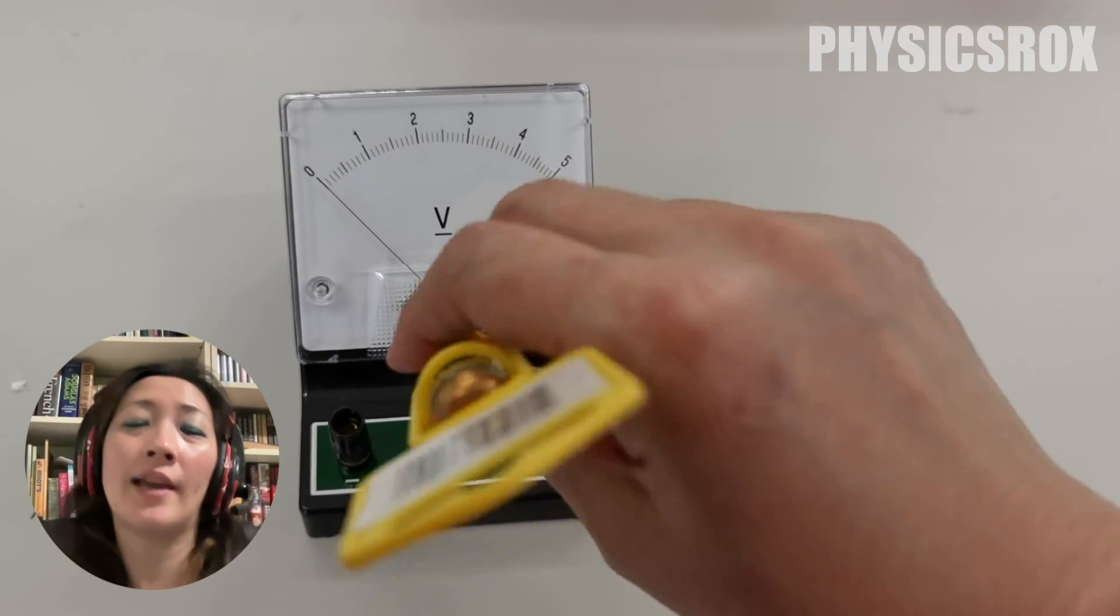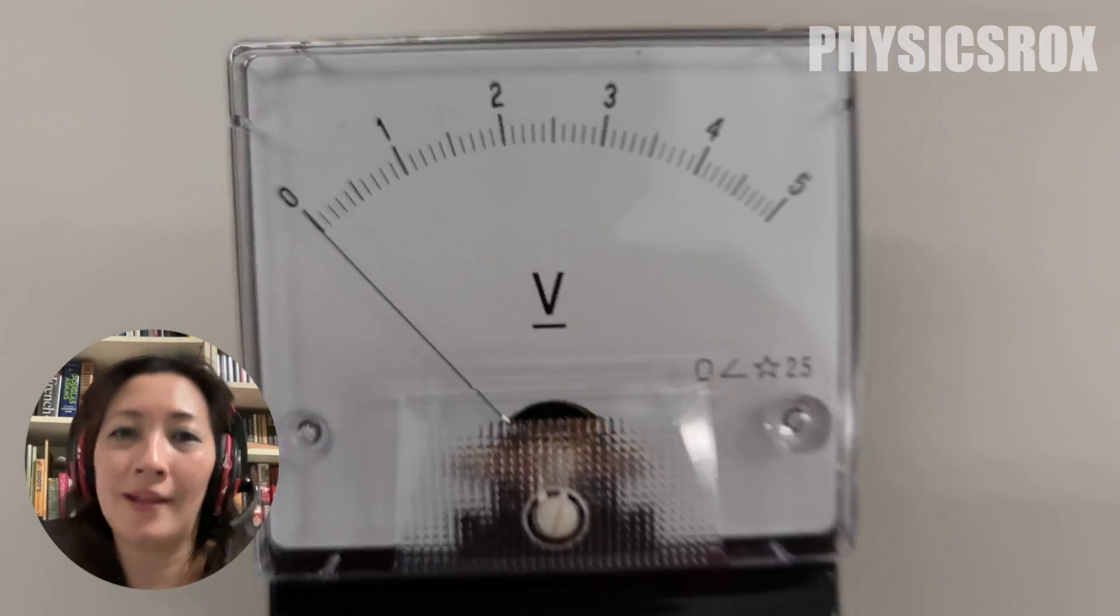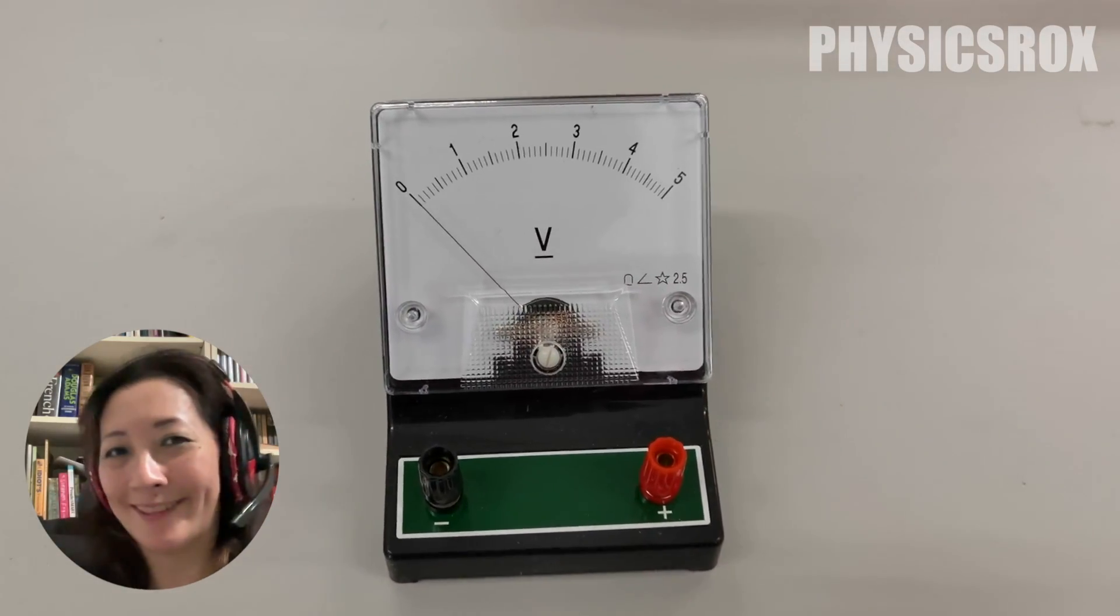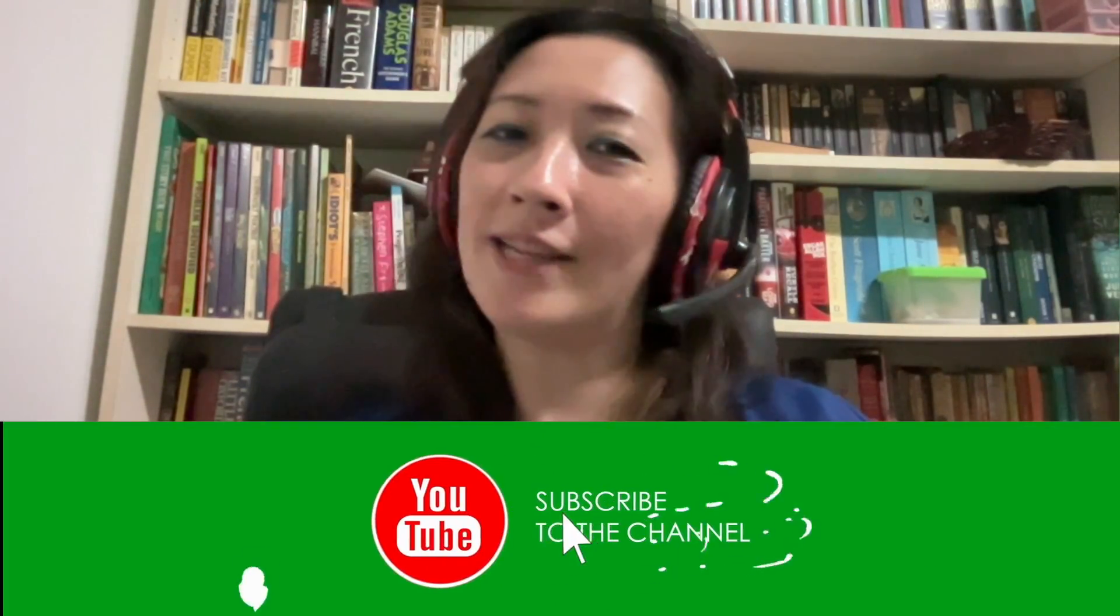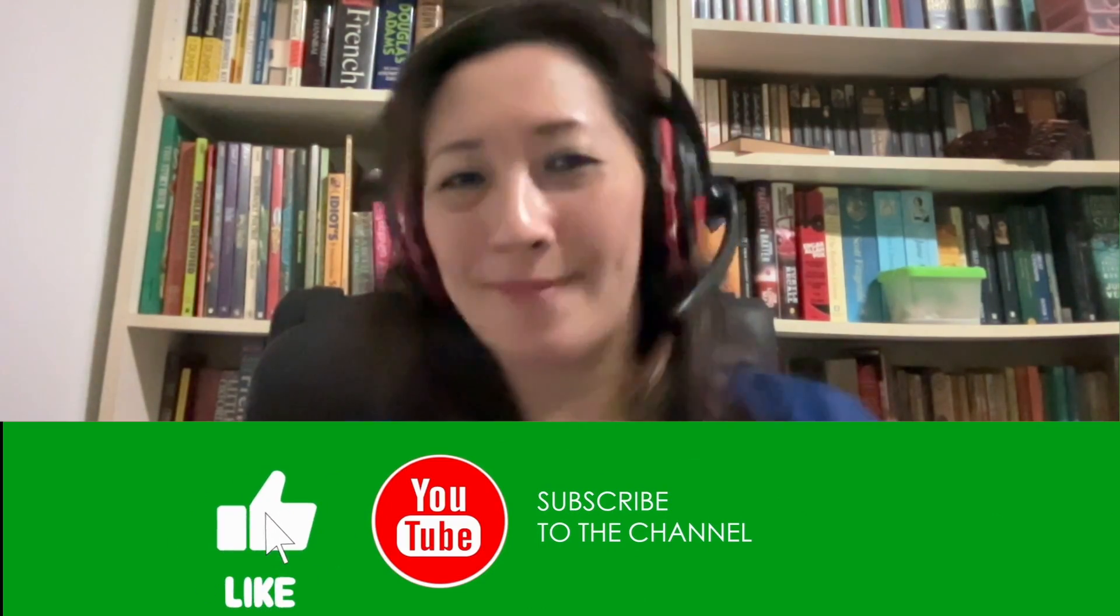And that's how we can fix the zero errors on an ammeter as well as a voltmeter. So I hope you found this video helpful in understanding a little bit more about physics lab apparatus. So don't forget to like and subscribe for more physics videos from your physics teacher, Ms. Ho.